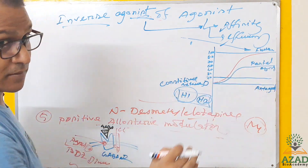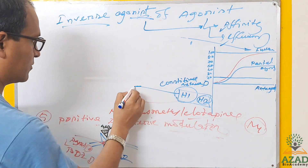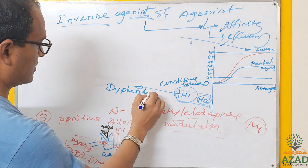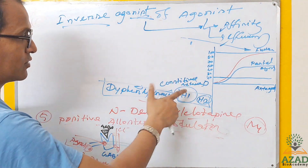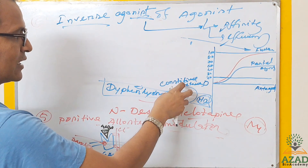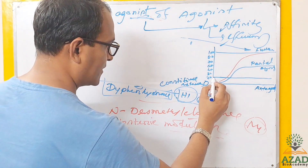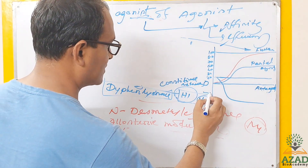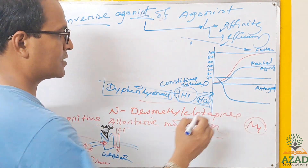The inverse agonist concept: when diphenhydramine (a first-generation antihistamine) binds the H1 receptor in the brain, it changes the conformation and the function changes in a negative manner — from the basal 20% activity down to minus 50%, meaning activity goes below zero. This negative shift is the 'inverse' aspect of the inverse agonist.